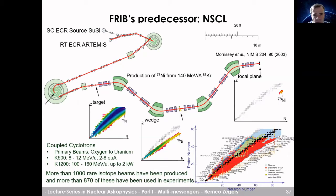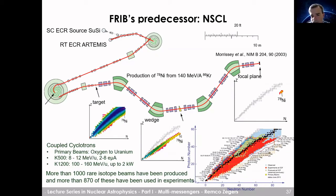At NSCL, the beam hits a thin foil production target, producing all kinds of elements across the chart of isotopes. A fragment separator made of many magnets is used to separate out the isotopes of interest — for example, nickel-78. With this device, more than 1000 rare isotope beams have been produced, of which 870 have been used in various experiments at the laboratory, many for the purpose of studying nuclear astrophysics.